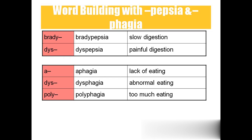That concludes the digestive system topic. You need to know the entire anatomy and physiology from the oral cavity to the anus, including the accessory digestive organs, as well as the word-building components for constructing medical terminology in the digestive system.